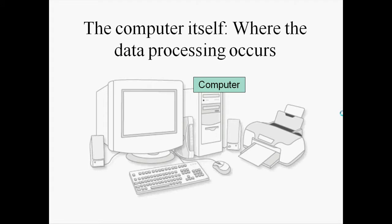Somewhere nearby — either next to the computer, on the floor under the table, or under the computer on top of the table — is a box. It could be vertical or on its side, but it's the computer itself, and it's what does all the work. It has circuit boards, fans, storage media, ways for other devices to be hooked up to it, and ways for transportable storage media like CDs and memory sticks to be put in and out of it.